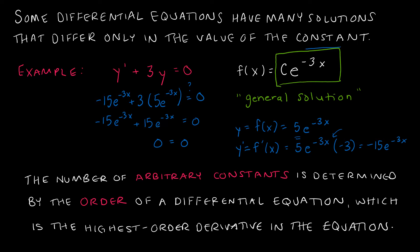This is called a general equation, and a general equation is going to have a c — or perhaps more than one c. The number of these arbitrary constants is determined by the order of the differential equation, which is the highest order derivative in the equation. Here we just have the first derivative, so we only have one arbitrary constant. If we had the second derivative, we would have two.